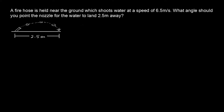The given we have is V₀ equal to 6.5 meters per second, and our range — delta x — is going to be 2.5 meters. This is actually kind of simple if you remember the range formula. Range is equal to V₀ squared times sine of 2θ, all over g. That formula was derived in your textbook.